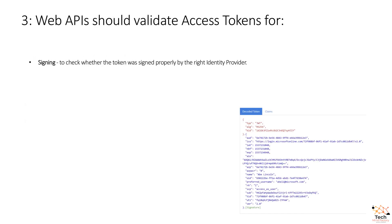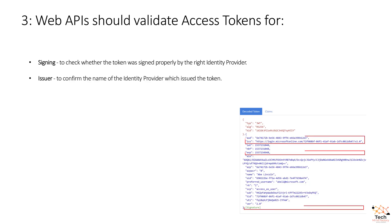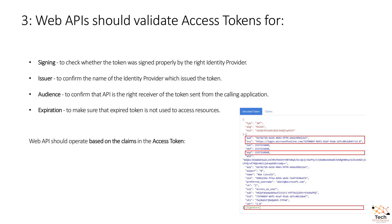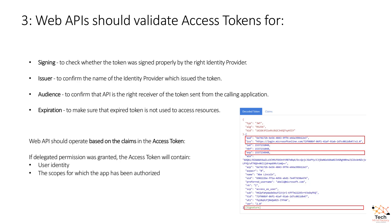Third recommendation: web APIs should validate access tokens for signing, to check whether the token was signed properly by the right identity provider; issuer, to confirm the name of the identity provider which issued the token; audience, to confirm that the API is the right receiver of the token sent from the calling application; and expiration, to make sure that an expired token is not used to access resources. Web APIs should operate based on the claims in the access token. If delegated permission was granted, the access token will contain user identity, the scopes for which the app has been authorized, and the user roles if defined by the API and assigned by the administrator.